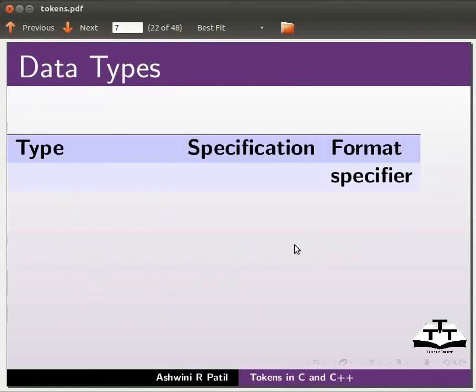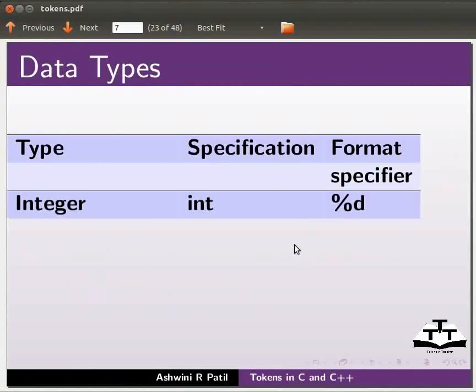Data types. Let us begin with integer data type. It is declared as int. If we want to print an integer data type, we will use %d as the format specifier. Similarly, we will use float and %f for floating point numbers.